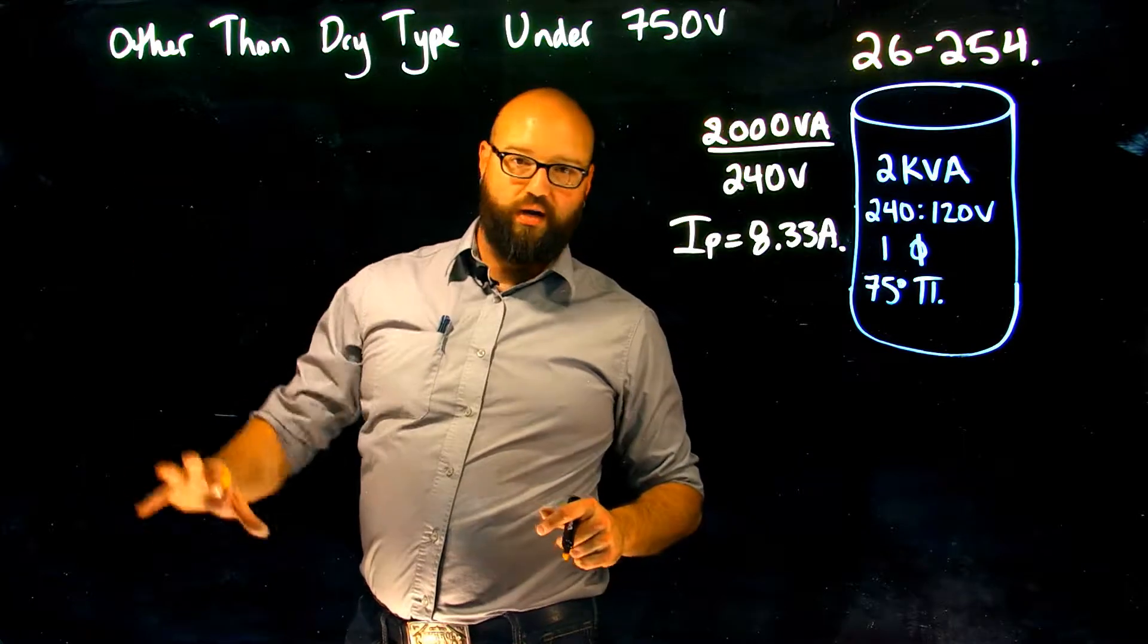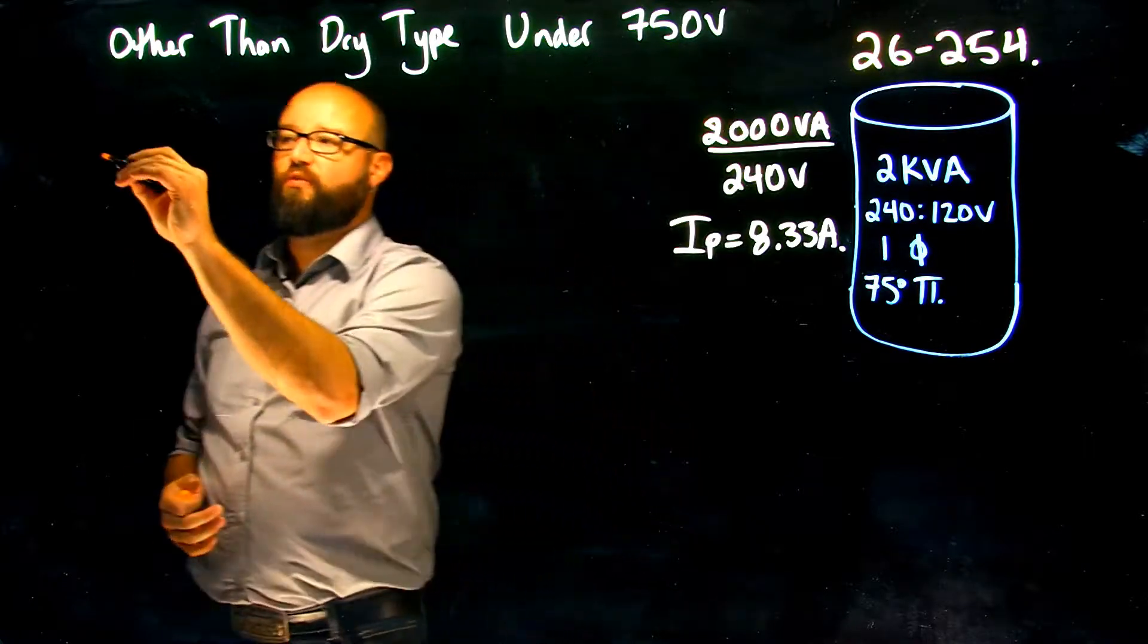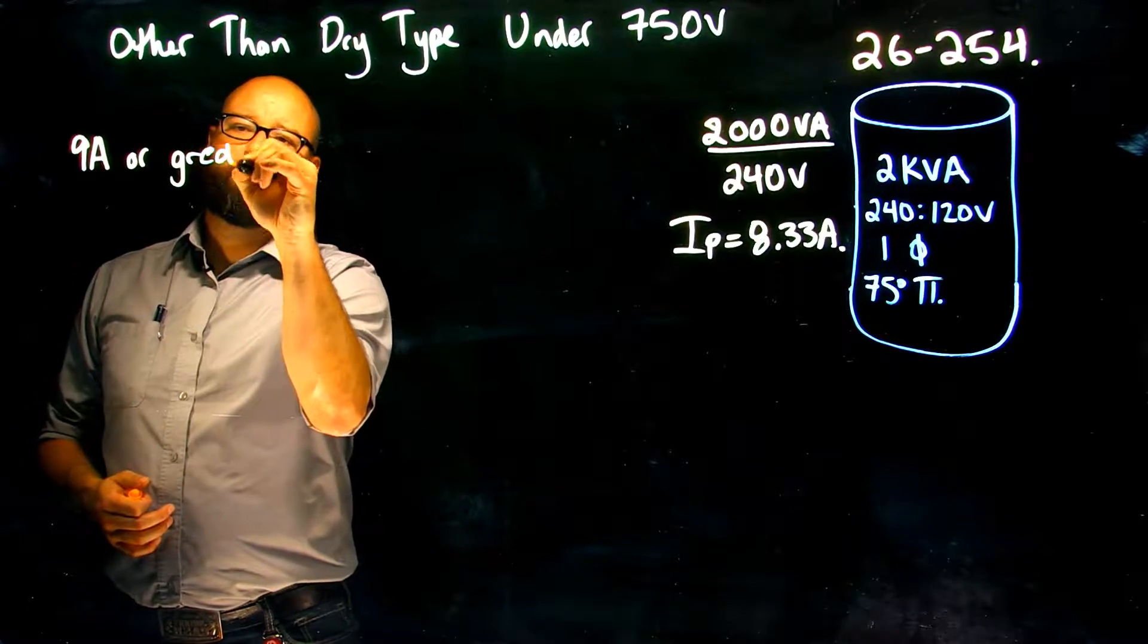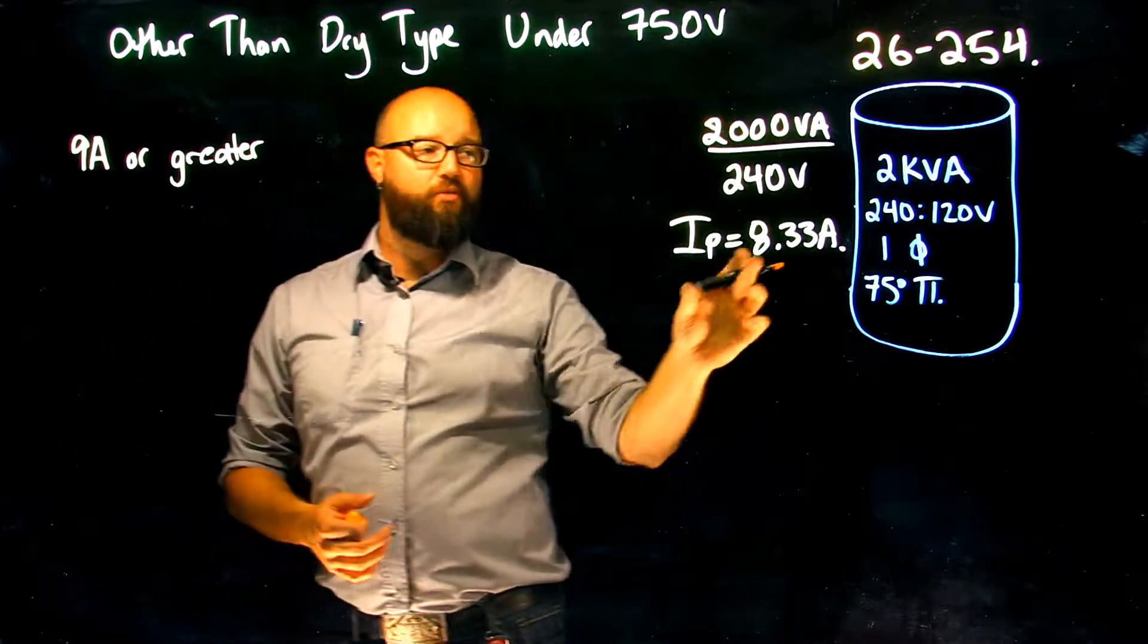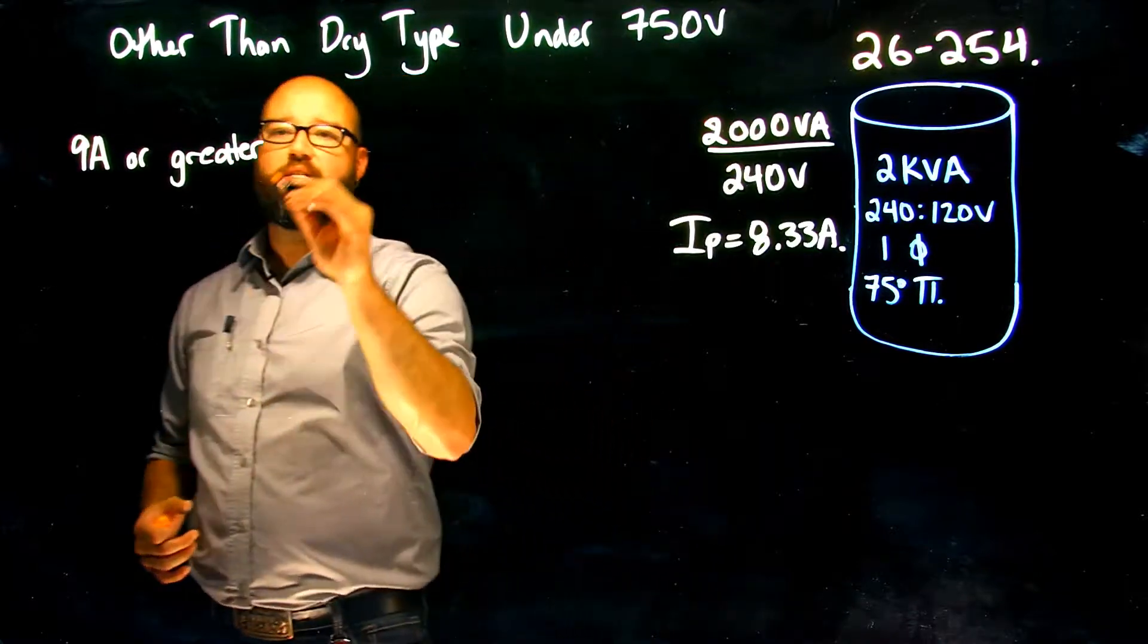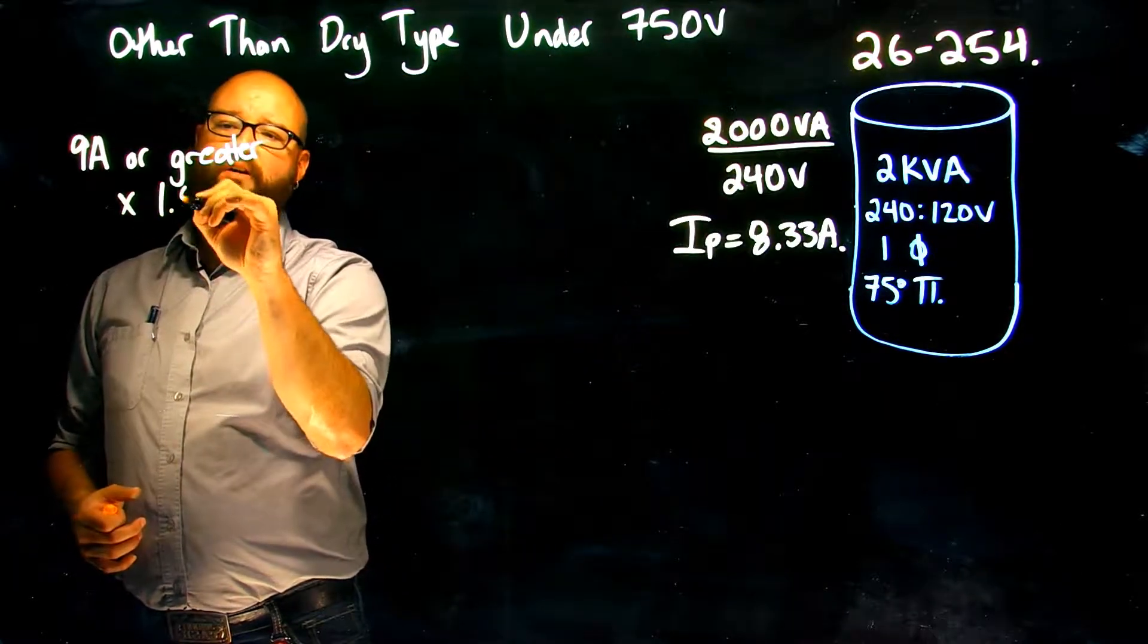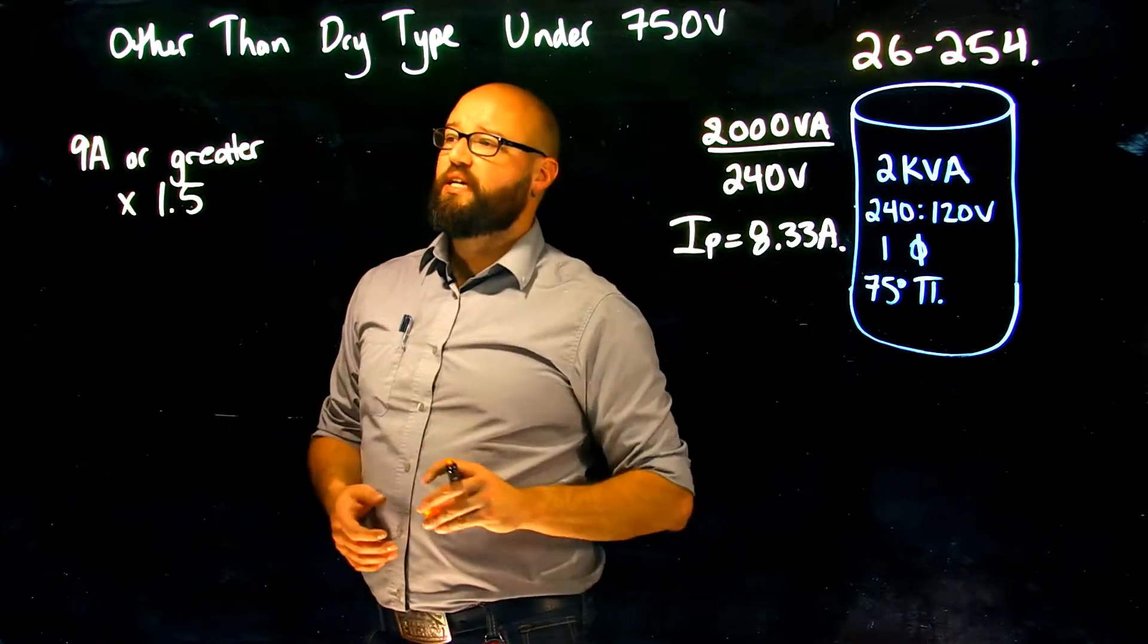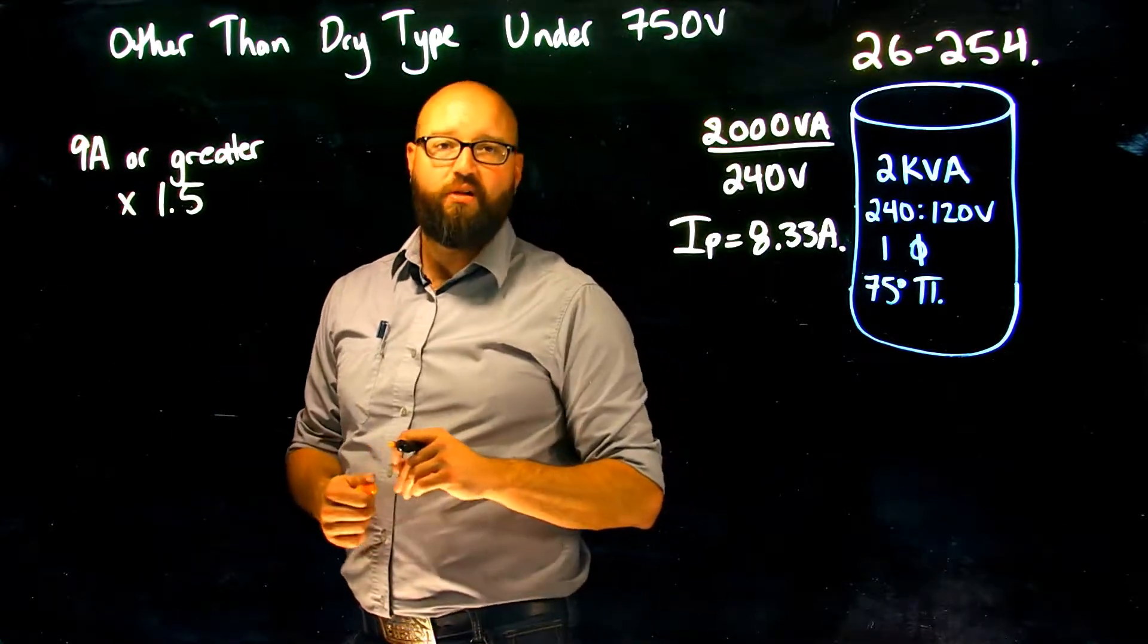So if we have 9 amps or greater, if my primary rated current is greater than 9 amps, it tells me my multiplier is 150 or 1.5.